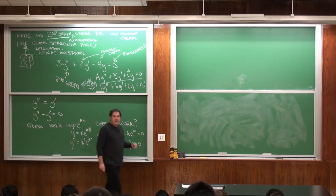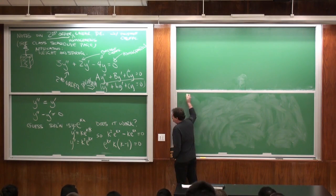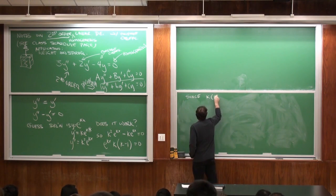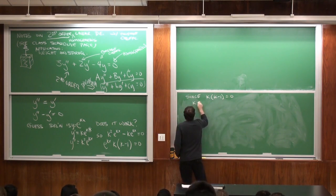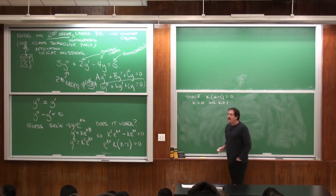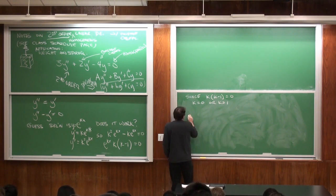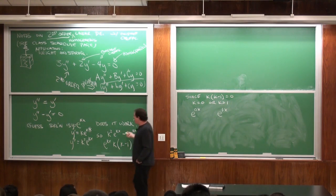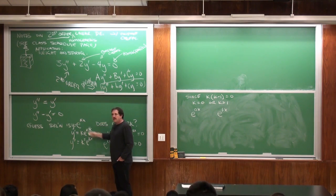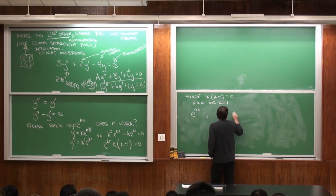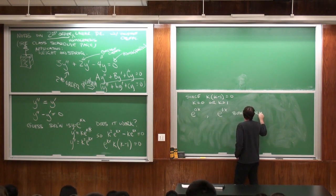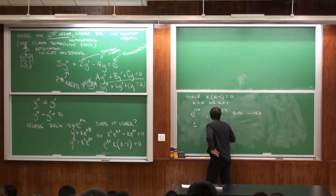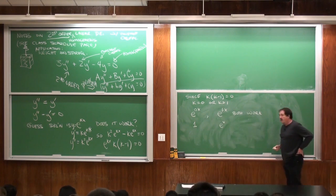So that means my solutions look like e^(0·x) and e^(1·x). e^(0·x) is just 1, and e^(1·x) is e^x. These both work — we can check: if y = 1, then y' = 0 and y'' = 0, so 0 = 0. If y = e^x, then y' = e^x and y'' = e^x, so that works too.